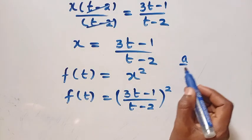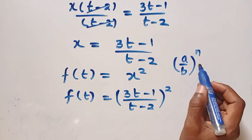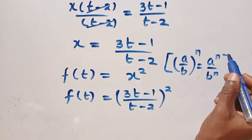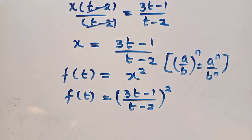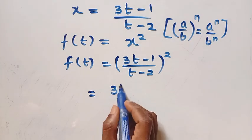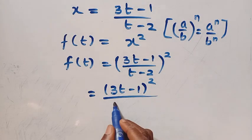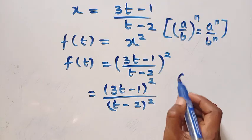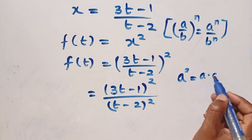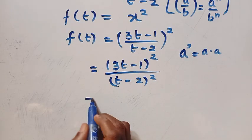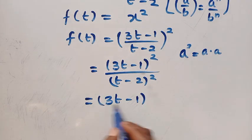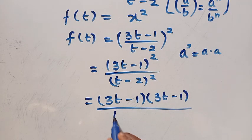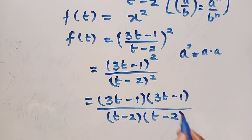Using the rule that (a over b) to the power of n equals a to the power n divided by b to the power n, this gives us (3t minus 1) raised to the power of 2, divided by (t minus 2) raised to the power of 2. And since a squared equals a times a, we write this as (3t minus 1)(3t minus 1) all divided by (t minus 2)(t minus 2).